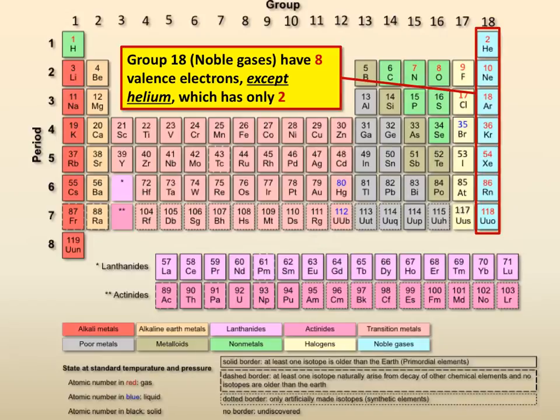That plays into why the noble gases are unreactive, because they already have the eight electrons that we want.